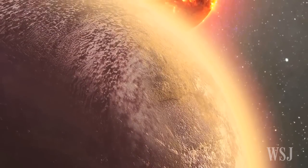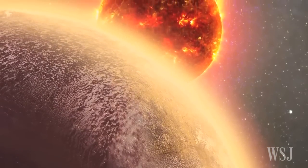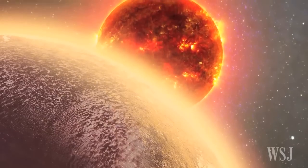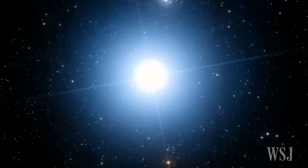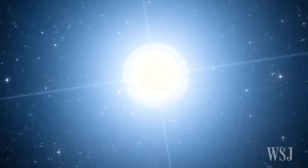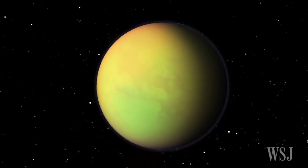The rocky new planet, dubbed GJ 1132b, is 1.2 times the size of Earth and orbits a small star located a mere 39 light-years from Earth. Considering that our galaxy spans about 100,000 light-years, that's in the nearby neighborhood of Earth, the scientists say.